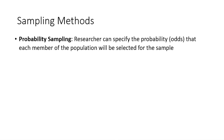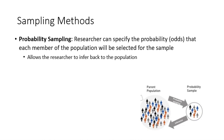There are two main sampling methods. Probability sampling — we'll focus on this next — means the researcher can specify the probability or the odds that each member of the population will be selected for the sample. It's intentional sampling, and this method is what allows a researcher to infer back to the population. With a good probability sample, the sample is representative of the population and we can draw conclusions about the population.